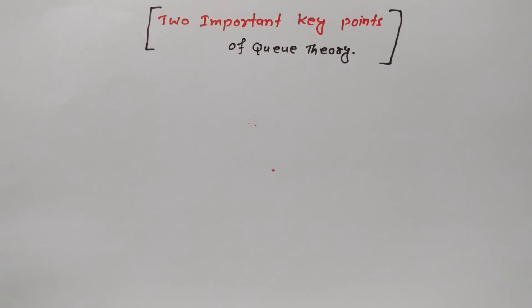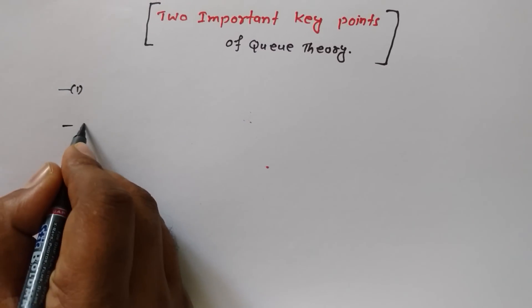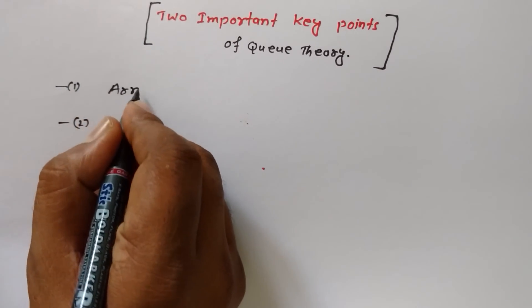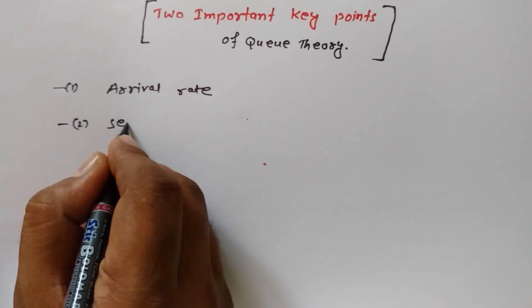Those points you need to know because they are most important. In Queue theory, first and second, only two points are most important. Those are arrival rate and service rate.